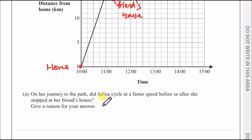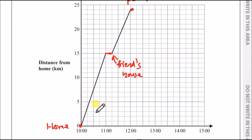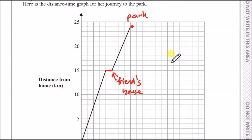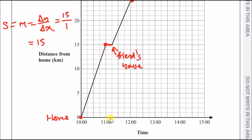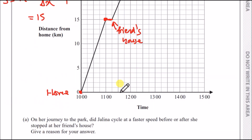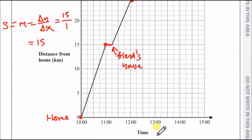On her journey to the park, did Jelena cycle fastest before or after stopping at her friend's house? We need to find which line has the greater gradient, since gradient equals speed. The change in distance from 0 to 15 is 15 km, and the change in time from 10 a.m. to 11 a.m. is 1 hour, so her speed to the friend's house was 15 kilometers per hour.